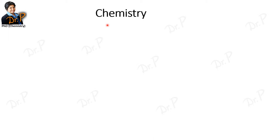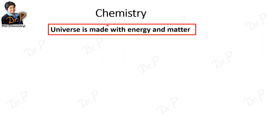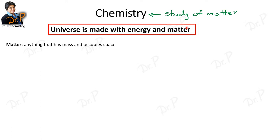For many people chemistry is a hard subject — they think it's filled with equations and calculations. But what exactly is chemistry? We call chemistry the study of matter. If we really think about the universe, the whole universe is made with two components: energy and matter. Chemistry is the branch of science that studies matter.